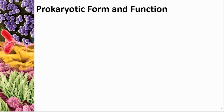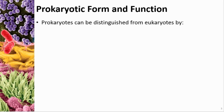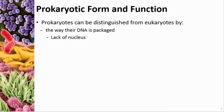Let's discuss some basics about prokaryote form and function, and we're going to distinguish between eukaryotes and prokaryotes as we go through this. Prokaryotes can be distinguished from eukaryotes in several ways. One way is by how their DNA is packaged. In a eukaryote, they have a nucleus, and as you know, prokaryotes do not have a nucleus, so the DNA is not housed inside of a nucleus.